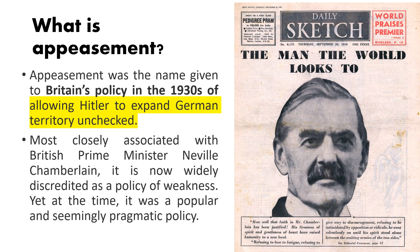Let's recap what appeasement is, and I hope you remember the guy in this particular slide. Appeasement was actually the British policy of allowing Hitler to actually grow in power. That's why we say here allowing Hitler to expand German territory unchecked. Appeasement is definitely something that is very closely associated with Chamberlain, so I hope you know how he looks like.